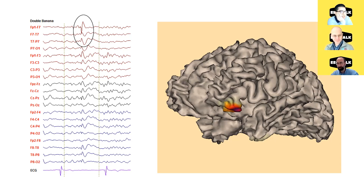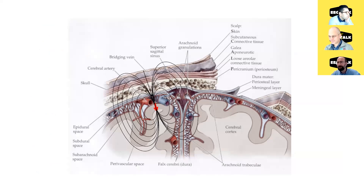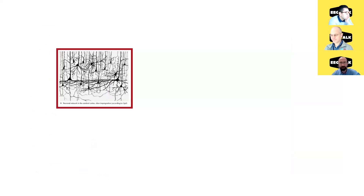I want to understand this better — can you explain the physics to us? Sure, my pleasure. So as you well know, the EEG comes from the cortex, and all these neurons generate return currents. This is the essential thing: currents flow — that's what I want you to remember. The source is in layers four and five of the pyramidal cells.